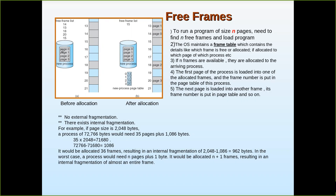For example, page 0 can be placed in one frame, page 1 can be placed in another frame and so on. The user process is divided into pages and the same amount of space is divided in main memory as frames. Both page size and frame size must be equal — then only the allocation is possible. This is the strict rule of paging.